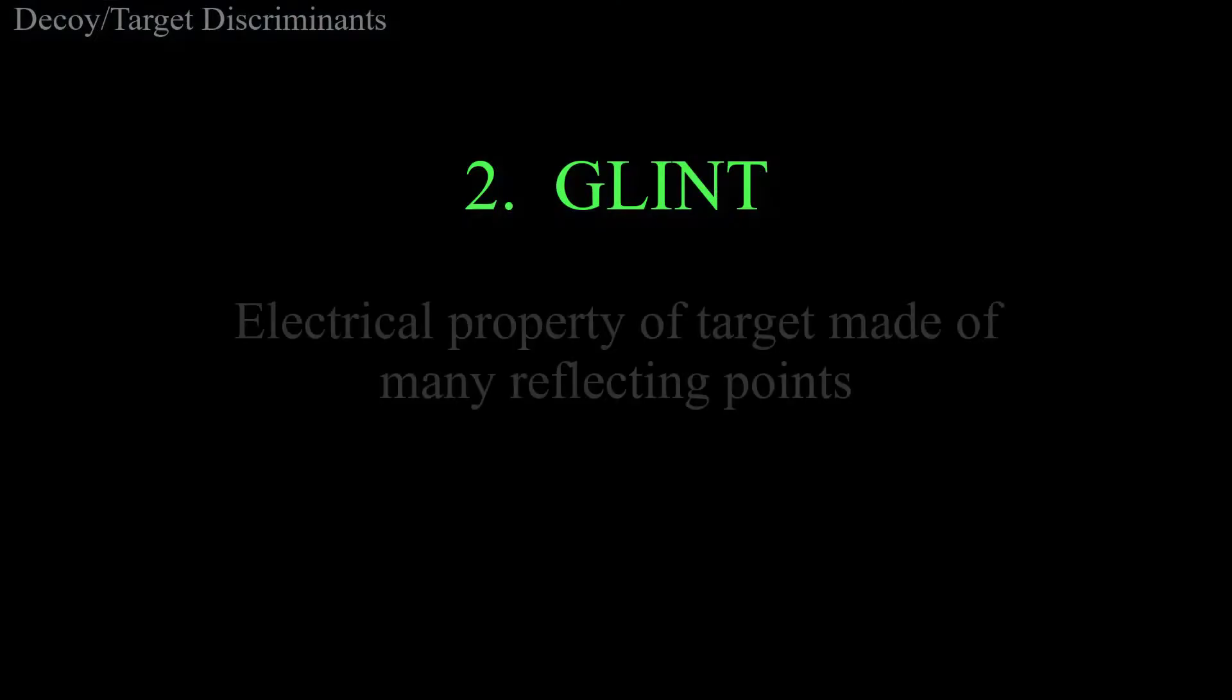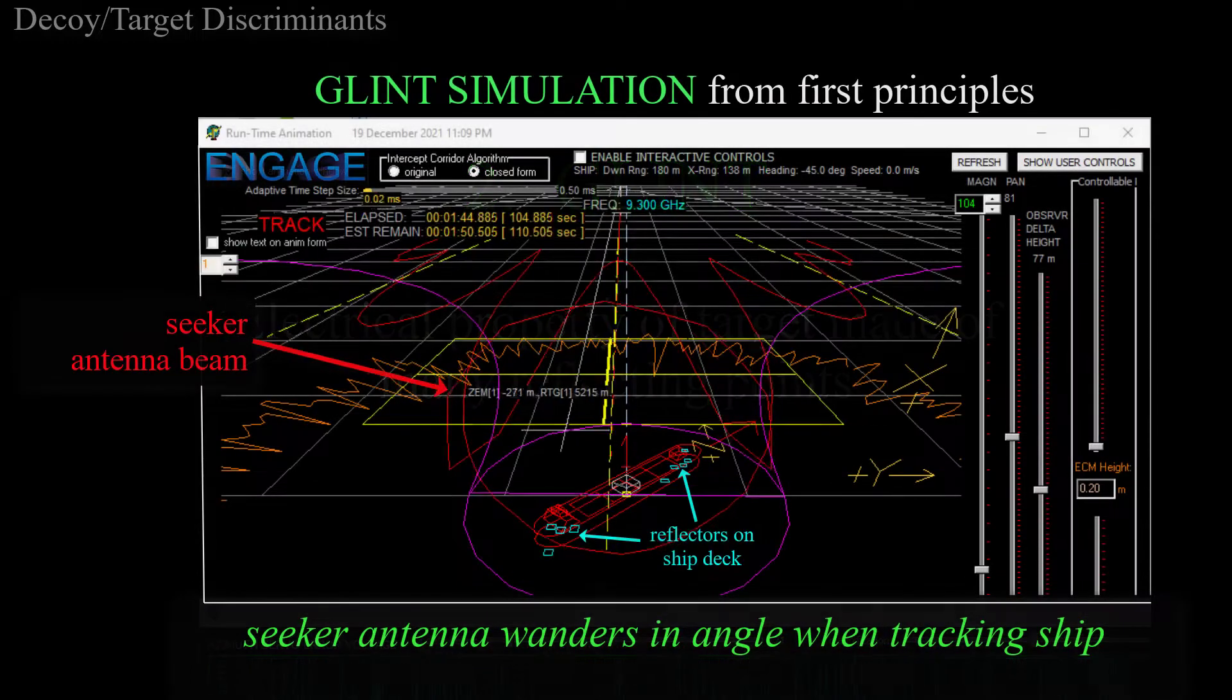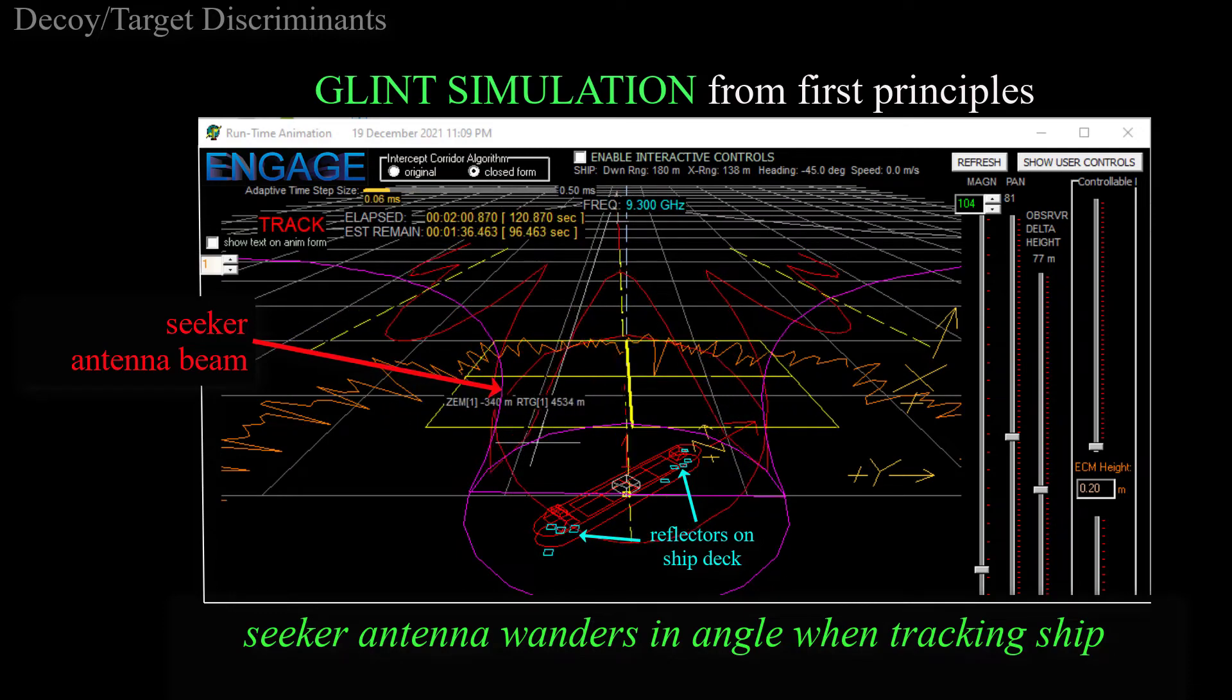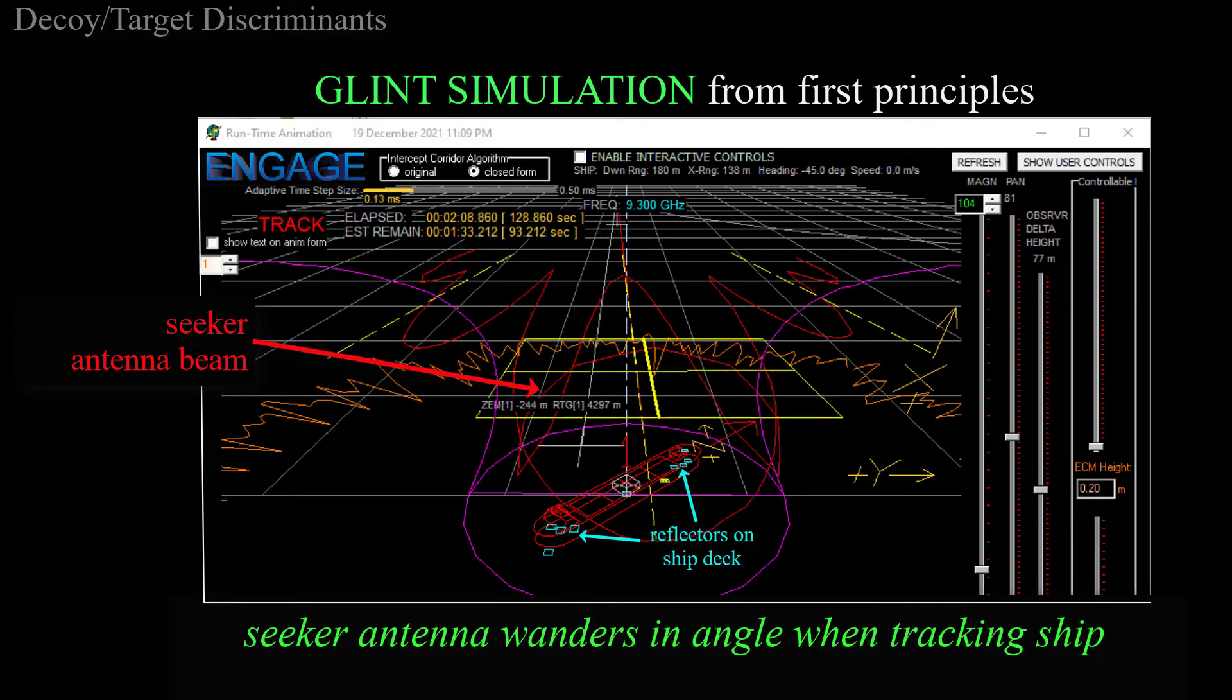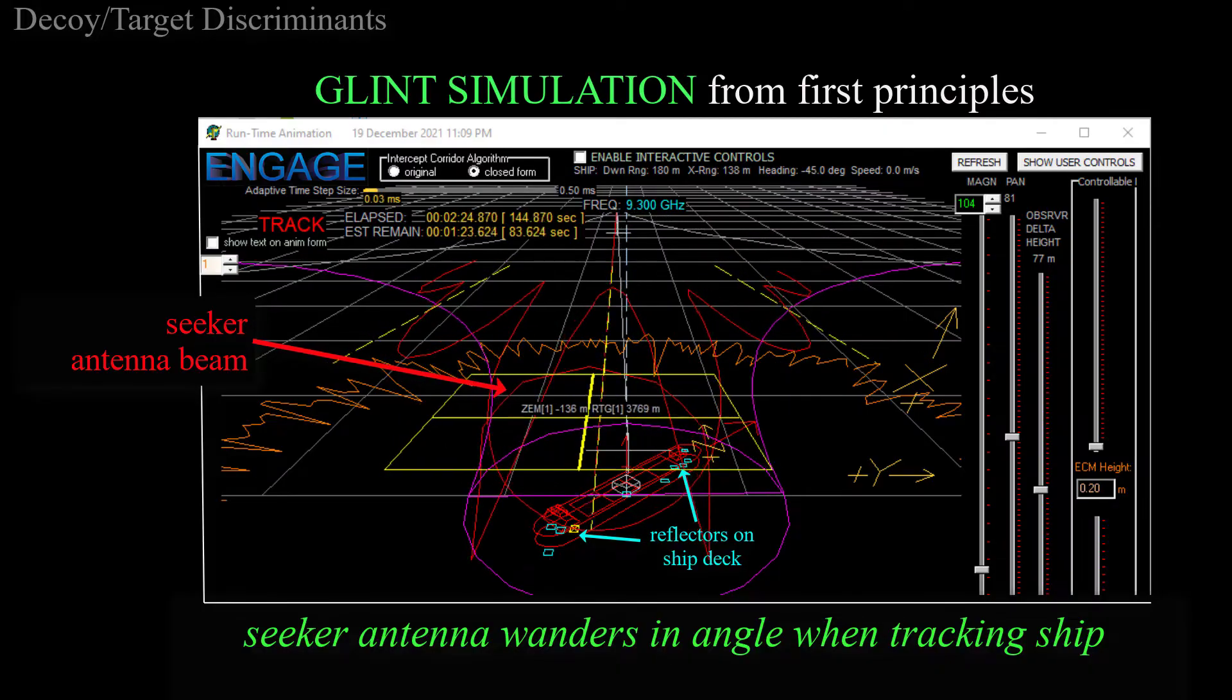Now, glint is the bigger concern. So what's glint? Glint is a property of a ship-like target. In other words, a large metal object that's basically a cluster of multiple reflecting points. Radar engineers discovered right away a peculiar thing when they used an angle-tracking radar to look at metal targets that have multiple reflection points.